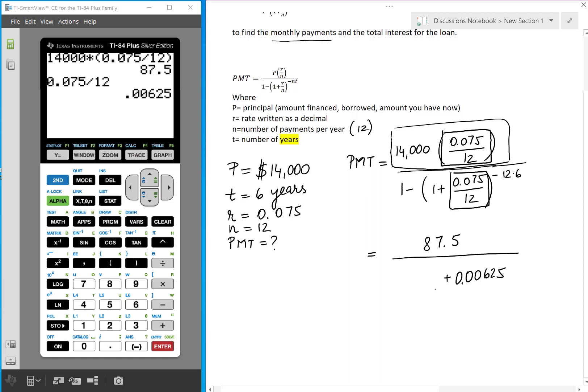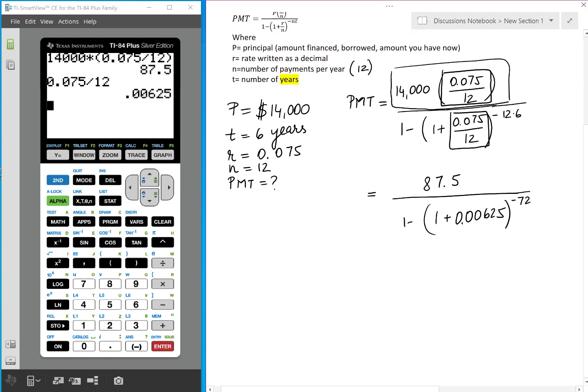That's plus 1. It's everything raised to negative 72. And then 1 minus that quantity. So I'm trying to go from inside out.